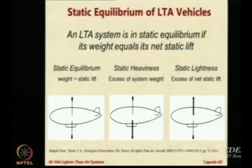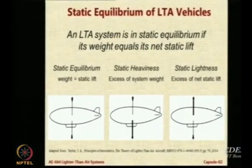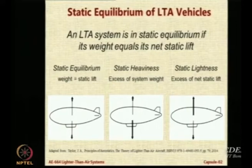Let us look at the static equilibrium of LTA vehicles. A system is in equilibrium when forces and moments are balanced. Static equilibrium for an LTA system occurs when its weight equals the net static lift — meaning the entire lifting capacity is consumed in overcoming the weight and nothing is remaining. When they are equal, we say it is neutrally buoyant or in static equilibrium.